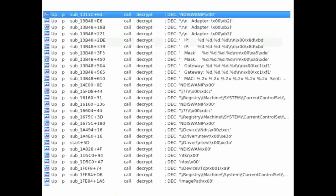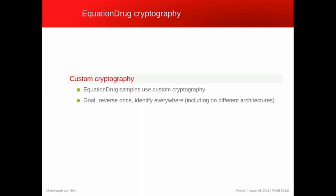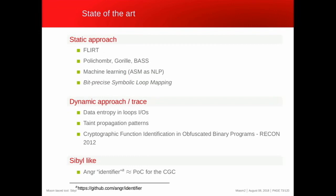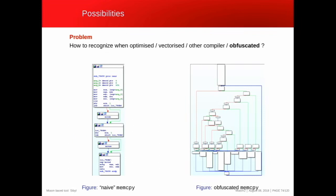Camille now presents the function identification part. Regarding the Equation Group DLLs, there is also cryptography inside. The idea is to reverse the code in one DLL, discover the cryptographic functions, then identify them in all DLLs including different architectures. The state of the art includes static approaches like IDA FLIRT, but we use a dynamic approach. Why? Because a function like memcpy can appear in a naive form, an obfuscated form, or a vectorized SSE version — static matching fails, so we treat the function as a black box.